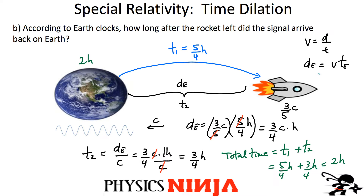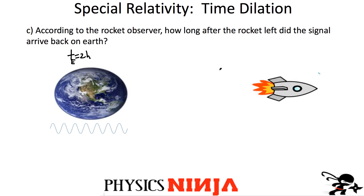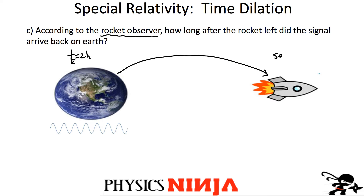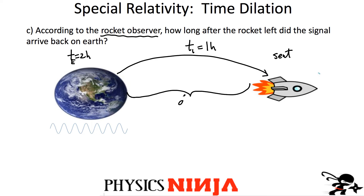Now let's look at Question C. According to the rocket observer, everything must be done in the rocket's frame. How long after the rocket left did the signal arrive back on Earth? According to the rocket, the signal was sent after one hour. For Earth it was 5/4 hours, but according to the rocket it's one hour. Also, according to the rocket, what is the initial distance to Earth as measured by the rocket?